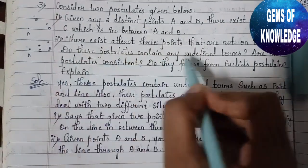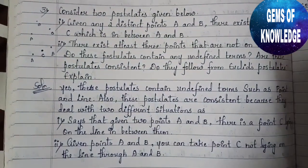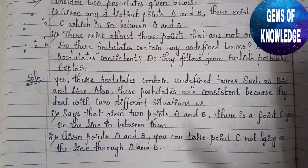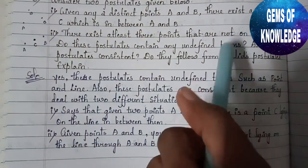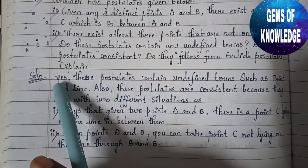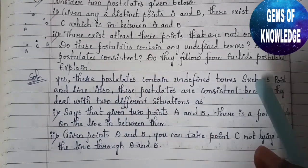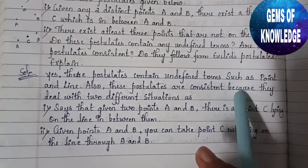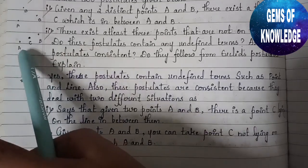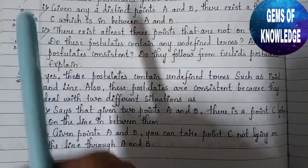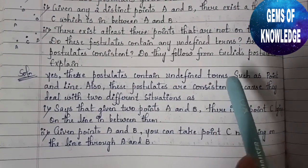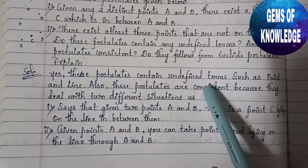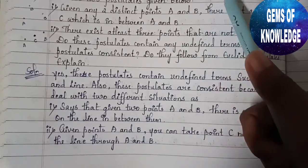The questions asked are: do these postulates contain any undefined terms? Are these postulates consistent? Do they follow from Euclid's postulates? The answer is: yes, these postulates do contain undefined terms — terms such as 'point' and 'line' are undefined. These postulates are also consistent because they deal with two different situations.